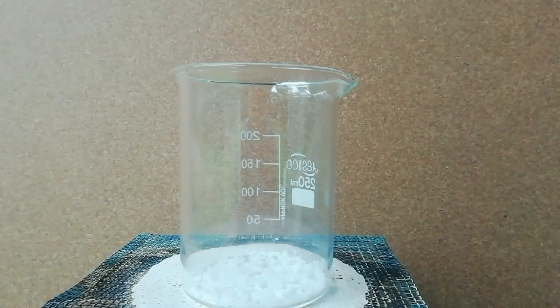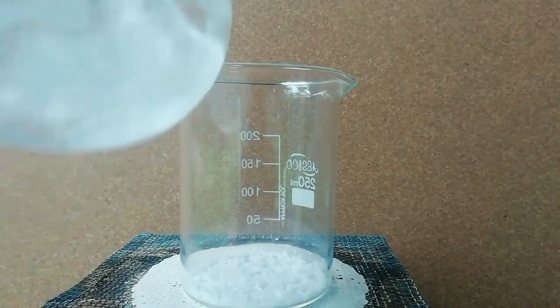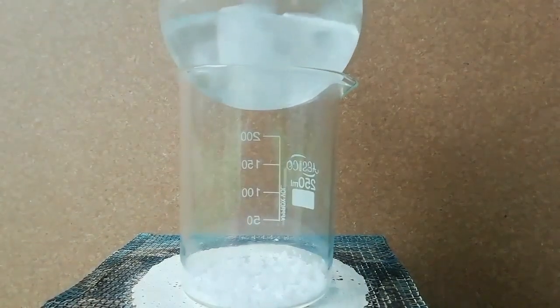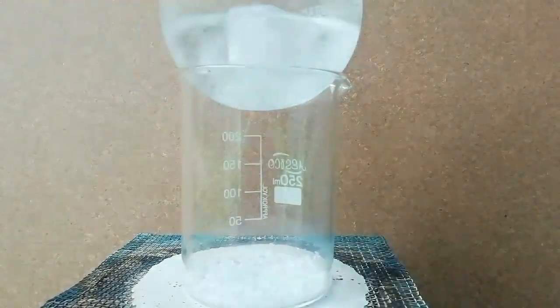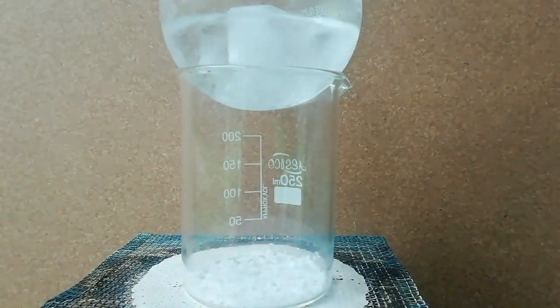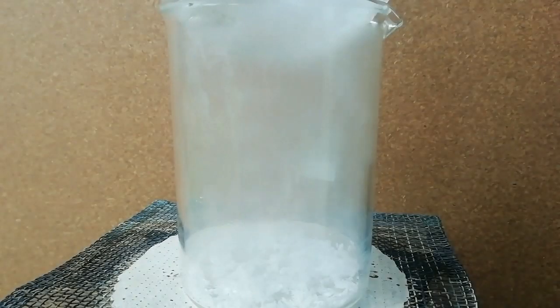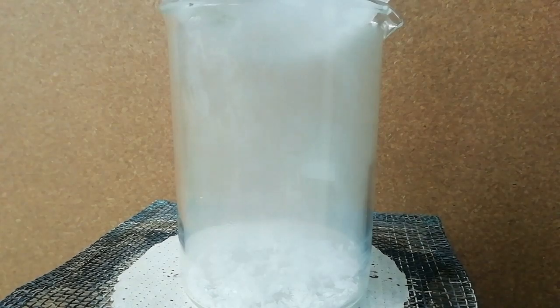First, 2 grams of thalic acid is placed in a 250 ml beaker. Then, I set a round bottom flask filled with ice and water to solidify the acid vapors.